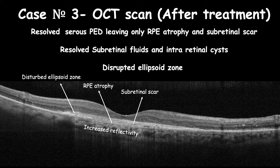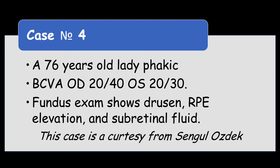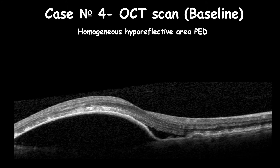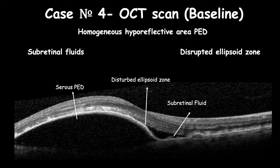A 76-year-old phakic female presented with reduced vision. Her best corrected visual acuity is 20/40 in her right eye and 20/30 in her left eye. Fundus examination shows drusen, RPE elevation, and subretinal fluid. OCT shows PED features with smooth RPE elevation containing clear homogeneous hyperreflective fluid, with subretinal fluids accompanied by ellipsoid zone disruption and drusen.